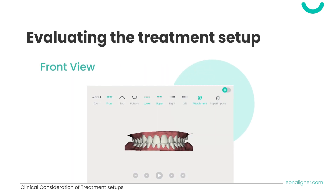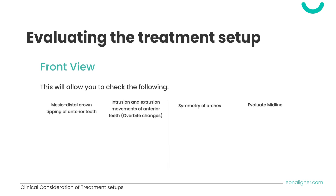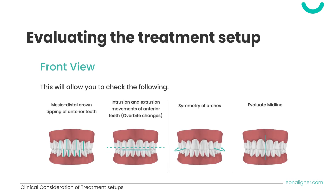The front view is accessed by pressing the front view icon on the upper left corner to get an anterior view of both arches together. You can also press upper and lower icons to view each arch alone from a frontal view. This allows you to check mesiodistal crown tipping of anterior teeth, intrusion and extrusion movements affecting overbite or open bite changes, symmetry of arches, and midline evaluation.